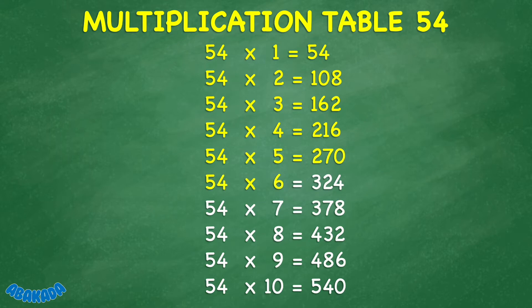54 times 5 equals 270. 54 times 6 equals 324. 54 times 7 equals 378. 54 times 8 equals 432. 54 times 9 equals 486. 54 times 10 equals 540.